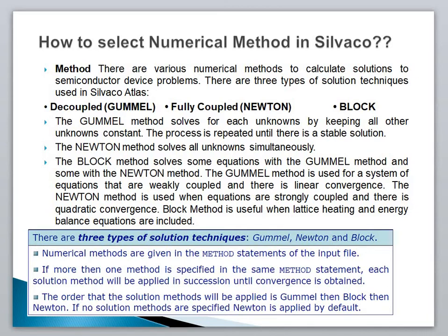Numerical methods are specified in the method statement of the input file. If more than one method is specified in the same method statement, each solution method will be applied in succession until convergence is obtained. The order is: Gumel first, then Block, then Newton. If no solution method is specified, Newton is applied by default — the code will automatically choose the Newton method to solve the corresponding equations.